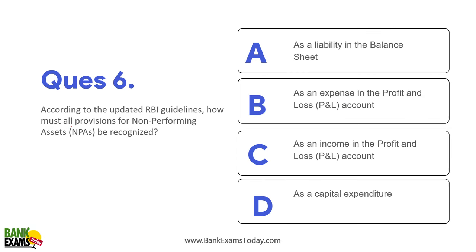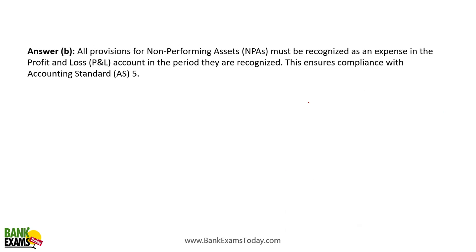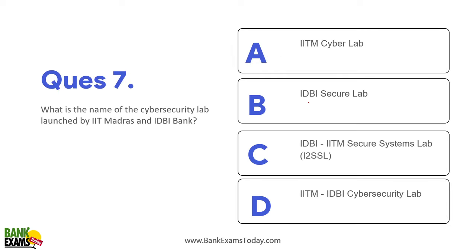According to updated RBI guidelines, how must all provisions for NPA be recognized? They must be recognized as an expense in the profit and loss account. The provision for doubtful debts goes into the P&L account, although it is also considered for capital. It must be put on the expense side according to AS5, Accounting Standard 5.